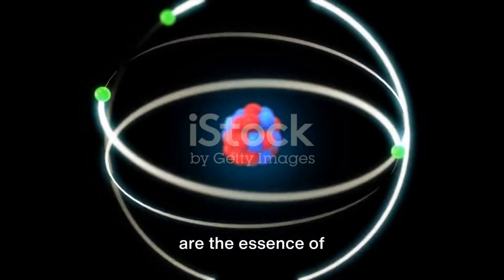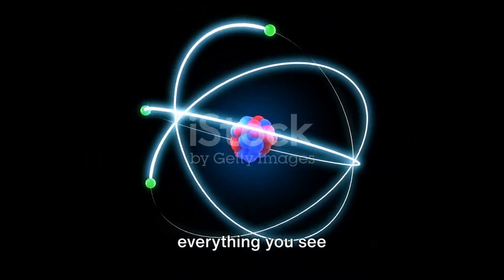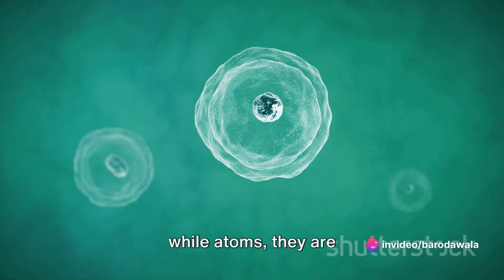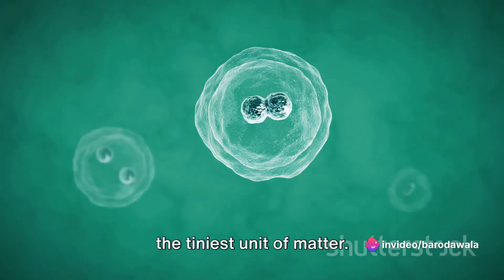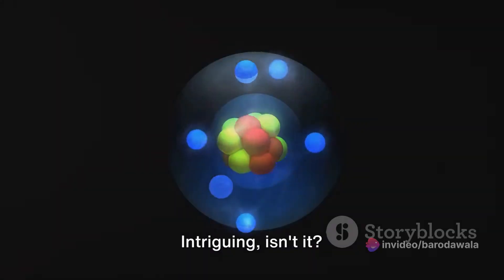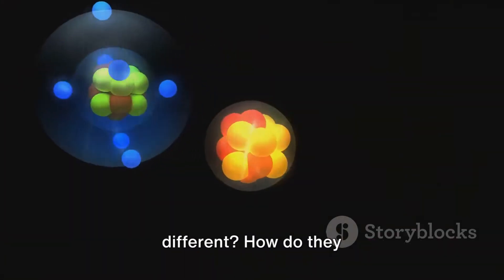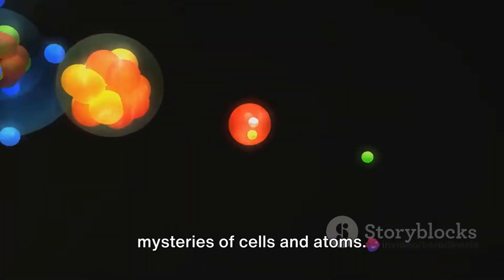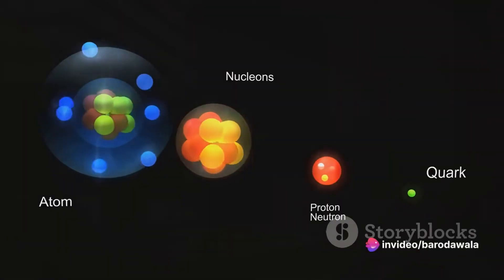These tiny entities are the essence of everything you see around you. Cells, they're the smallest unit of life while atoms are the tiniest unit of matter. Intriguing, isn't it? So how are they different? How do they function? What makes them unique? Stay tuned as we unravel the mysteries of cells and atoms.